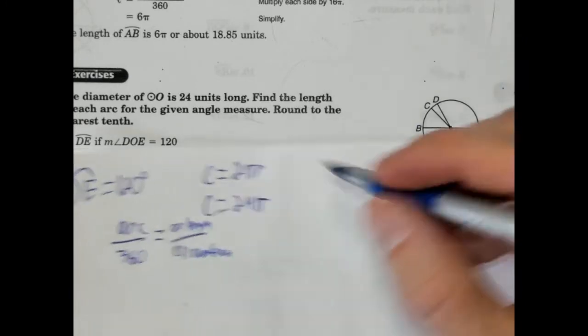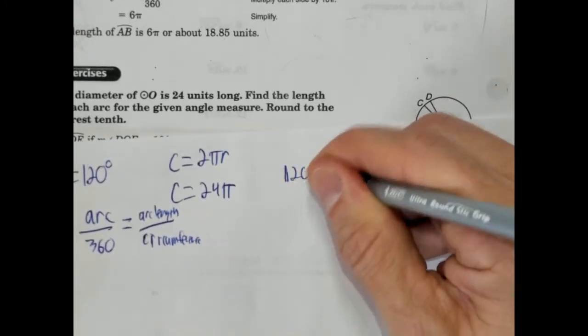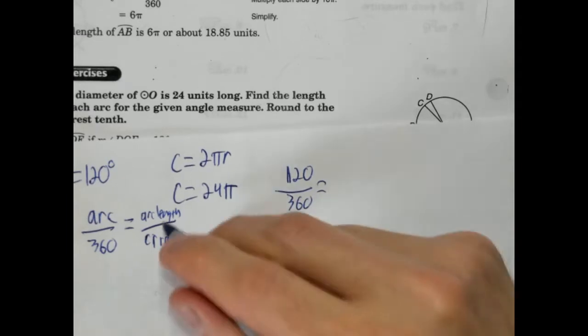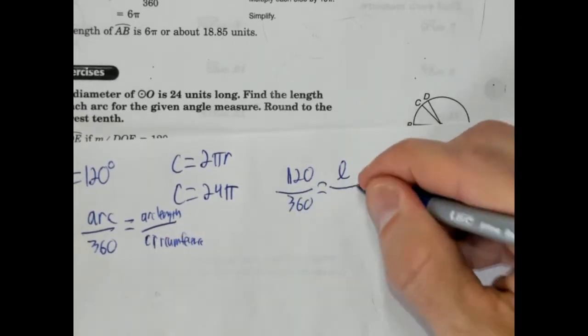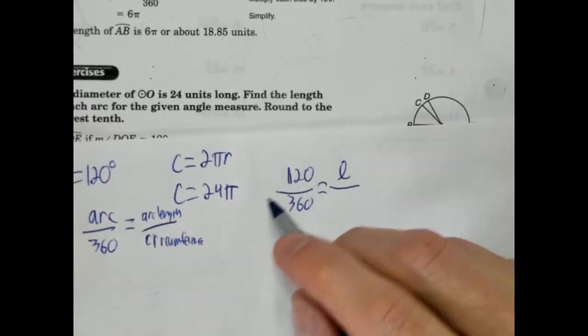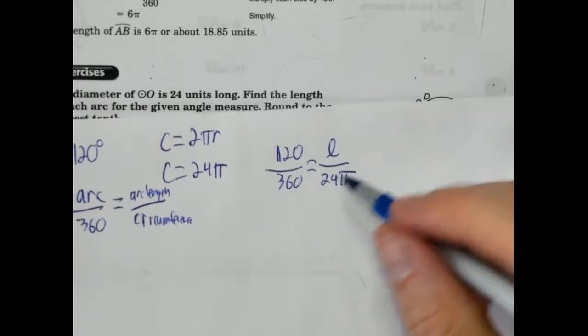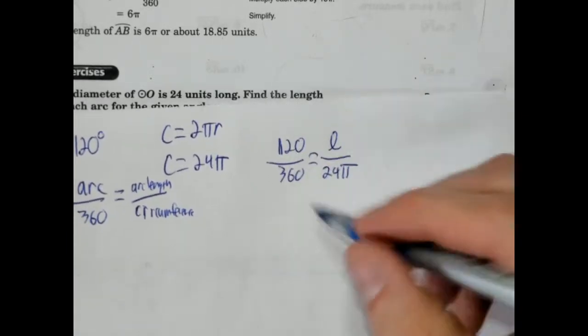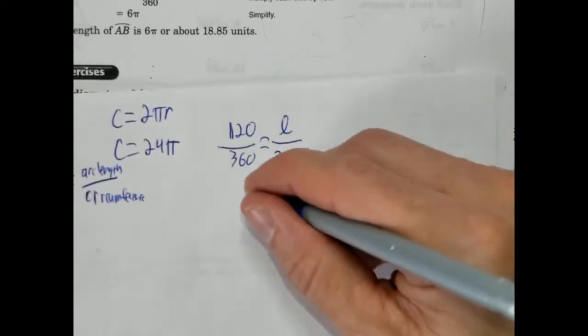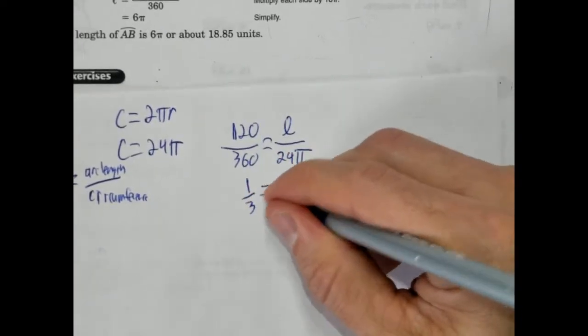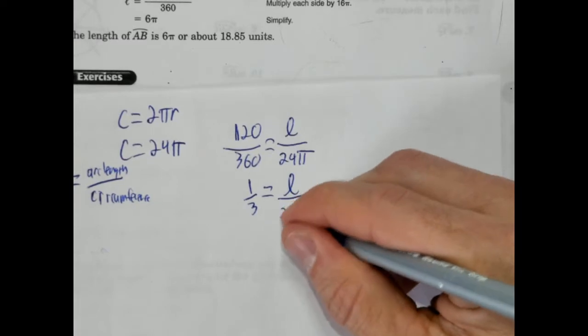So we know the arc is 120 degrees. We know that 360 is 360. The arc length, we don't know. We're going to call that L. And we know that the circumference is 24 pi. So here we go. Let's figure this out. So we can actually simplify this. This is 1 third. So 1 third equals L over 24 pi.